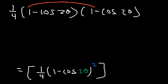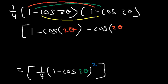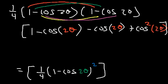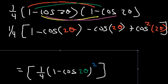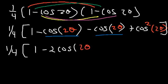Now let's FOIL: 1 times 1 is 1; 1 times negative cosine 2θ is negative cosine 2θ; negative cosine 2θ times 1 is another negative cosine 2θ; and negative cosine times negative cosine is positive cosine squared 2θ. Combining like terms, the two middle terms give negative 2 cosine 2θ, leaving us with 1 minus 2 cosine 2θ plus cosine squared 2θ, all times one-fourth.